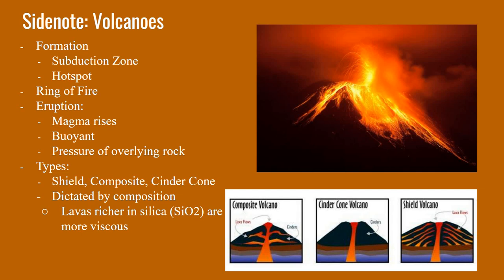Depending on the composition and amount of magma, we can get different types of volcanoes, including shield volcanoes, composite volcanoes, and cinder cone volcanoes, all shown here. The main reason we get these different types is that magmas — or eventually lavas — that are richer in silica, those felsic materials, are more viscous, which means they don't flow as easily.